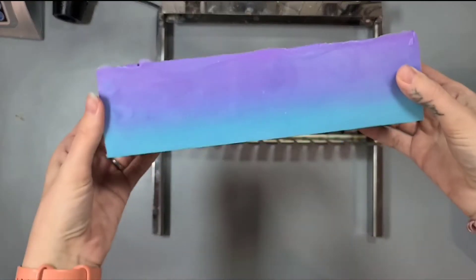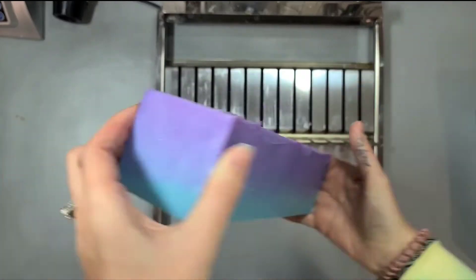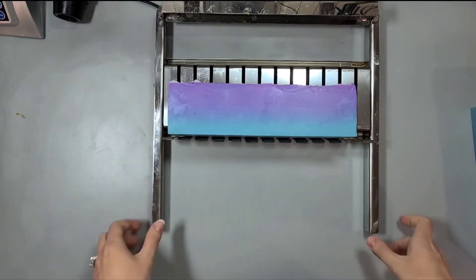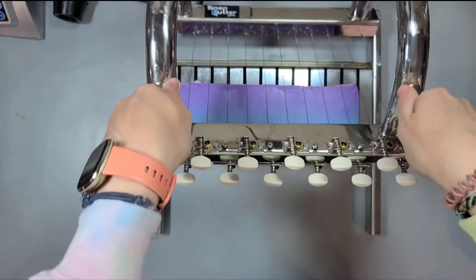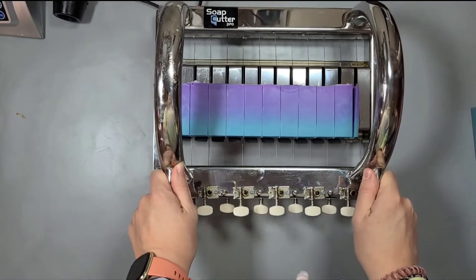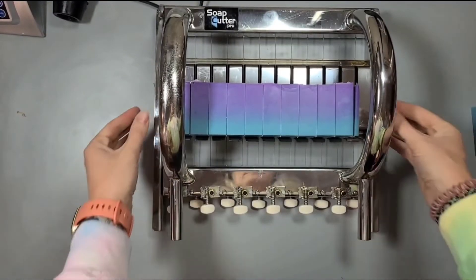I'm still loving my Soap Cutter Pro. Love it, love it. So I did decide to cut this sideways, just because I didn't want the glitter to run through the soap and cause drag marks on it.